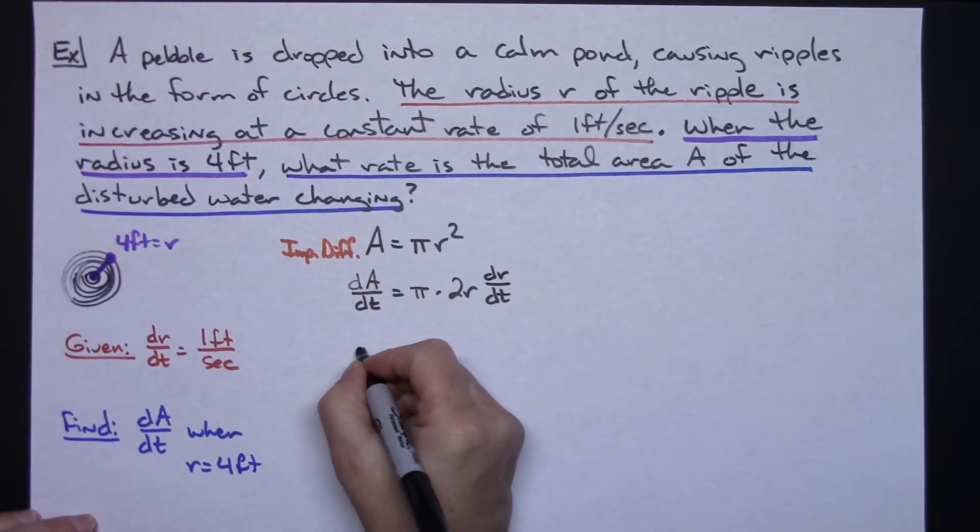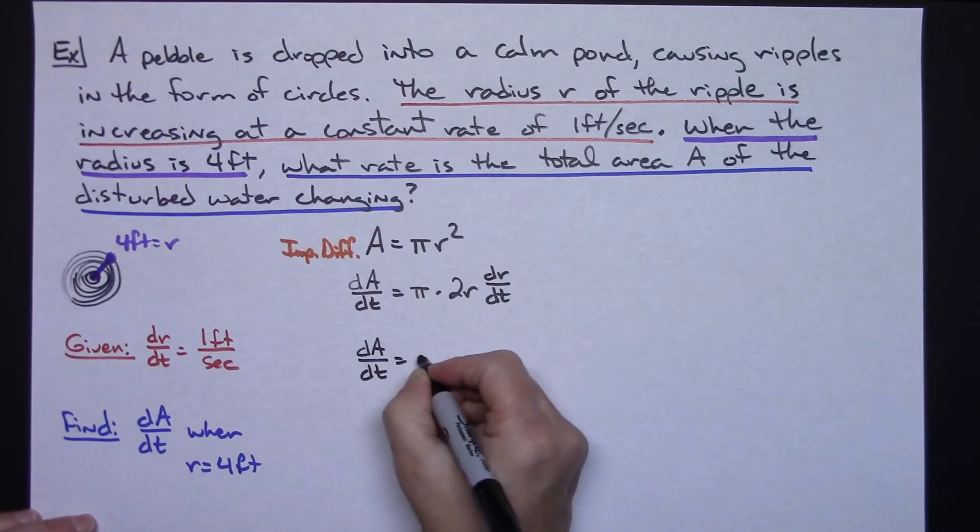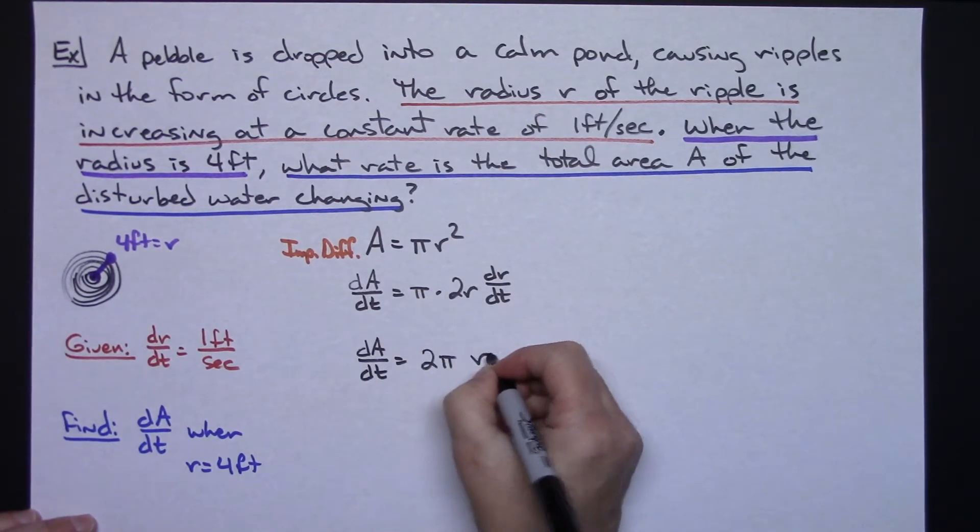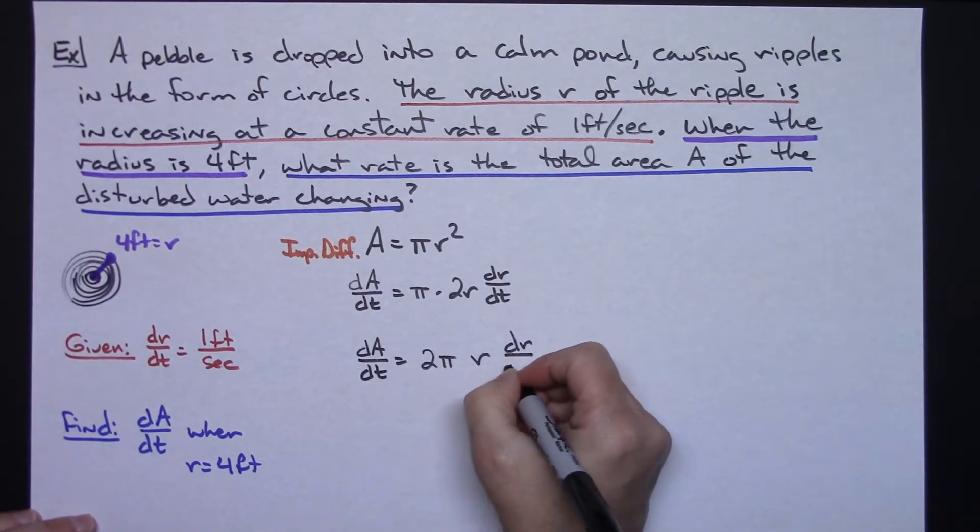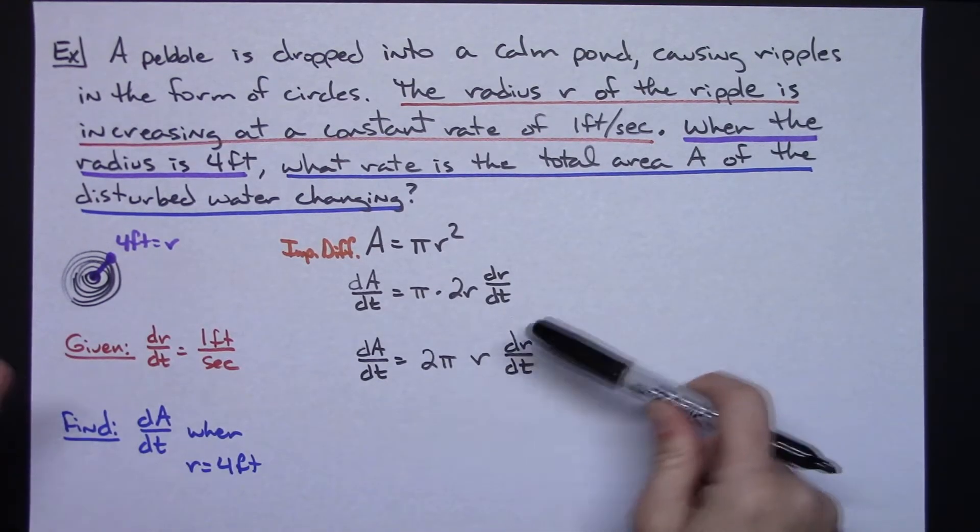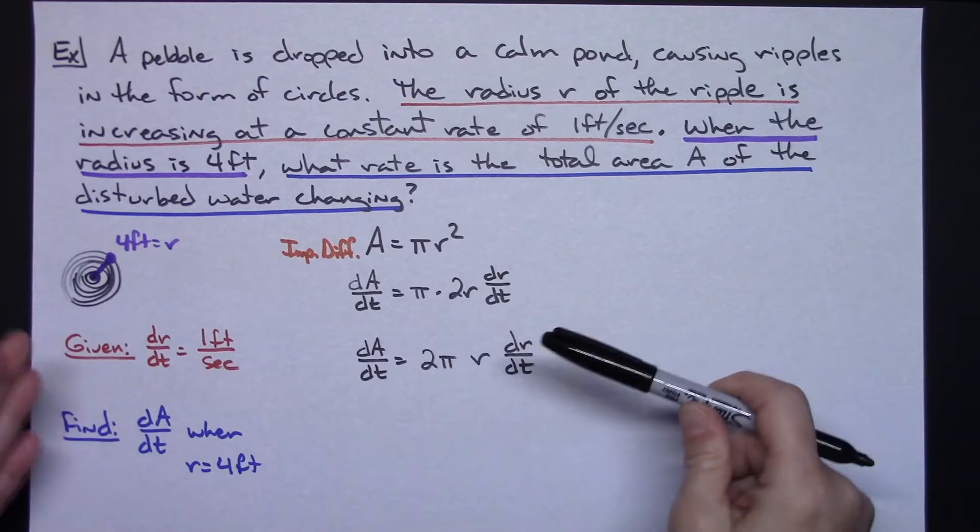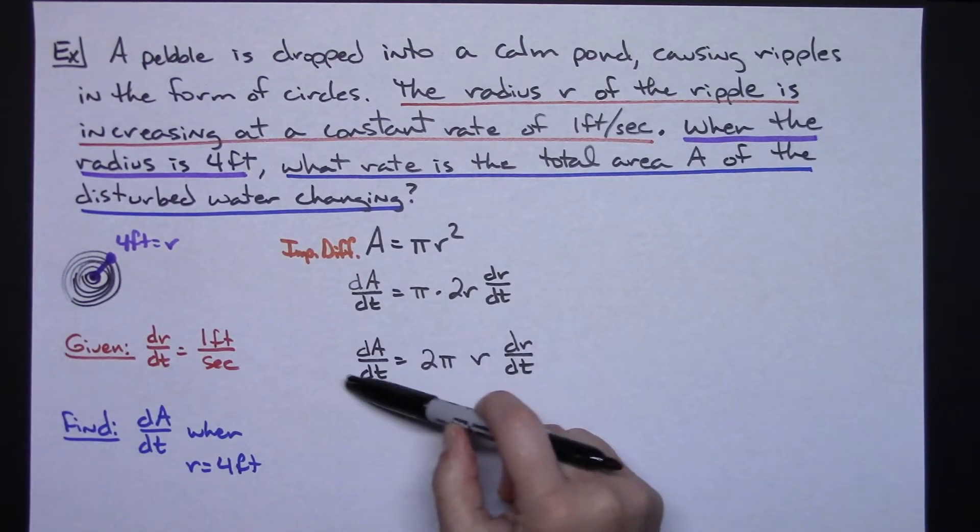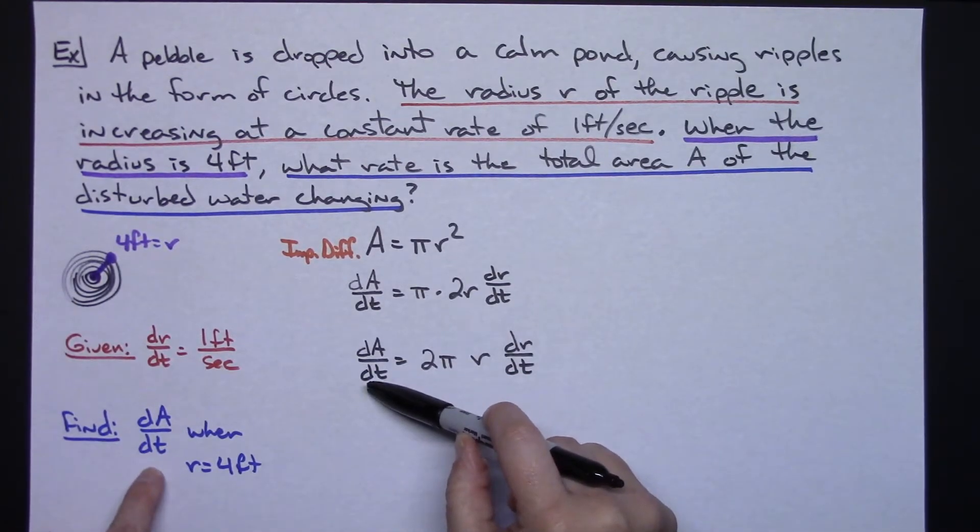So dA/dt, let's make that a 2 pi r dr/dt. Now at this point I'm going to go through and I'm going to see what I've got and what I know and what I can plug in.